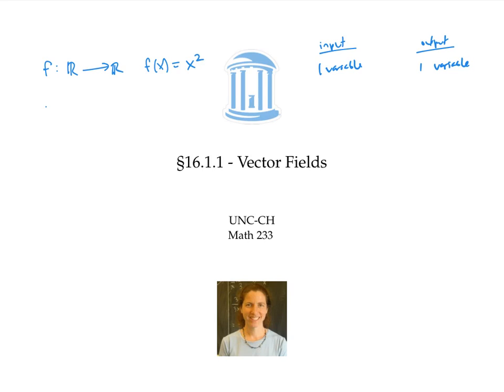At the beginning part of this class, we also studied functions that go from R to say R two, or R three. So their input is one variable, and their output is two or three variables. So for example, that would be something like f(t) is given by the three dimensional vector (t, t squared, t cubed).